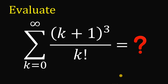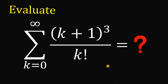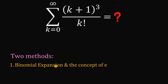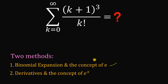Today we will answer an email challenge given by one of our followers. The question: evaluate the summation of (k+1)³ over k factorial from k equals zero up to infinity. Pause this video and try it yourself. I will show you two different methods. The first is my approach using binomial expansion and the concept of e. The second is a shortcut using derivatives and the concept of e raised to the power of x.